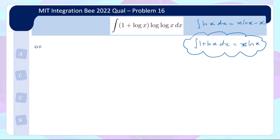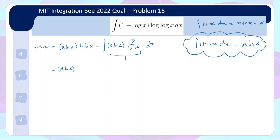Using integration by parts on the integral: first integrate (1 + log x) to get x·log x, keeping the outer log(log x); then subtract the integral where we keep (1 + log x) but differentiate log(log x), giving 1/(x·log x)·1 = 1/(x·log x). Multiplying by x·log x, everything cancels and becomes 1. So the answer is x·log x·log(log x) − x + c.